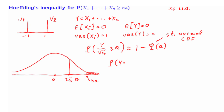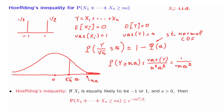Chebyshev's inequality tells us that the probability of Y being larger than a certain number is less than or equal to the variance of Y divided by the square of that number. Since the variance is n, this is 1 over n·a squared. So Chebyshev's inequality tells us that this probability goes to 0 at least as fast as 1/n. However, it turns out that this is extremely conservative. Hoeffding's inequality tells us something much stronger: that this tail probability falls exponentially with n.